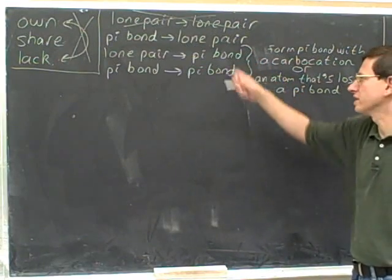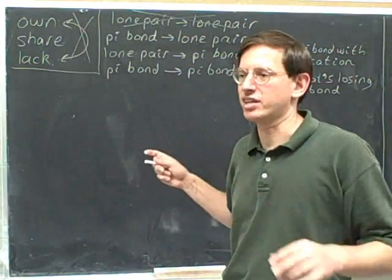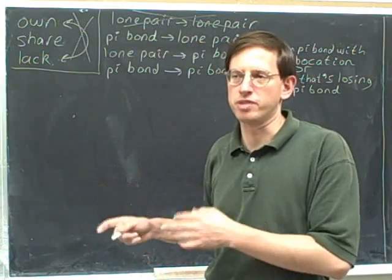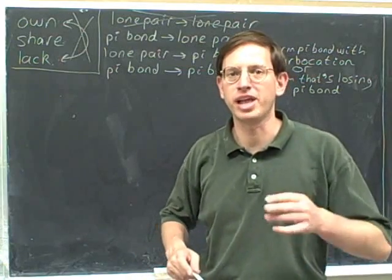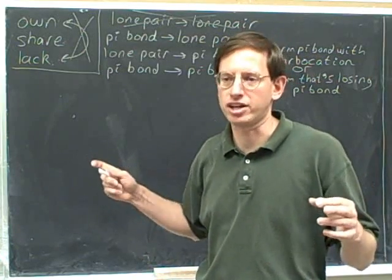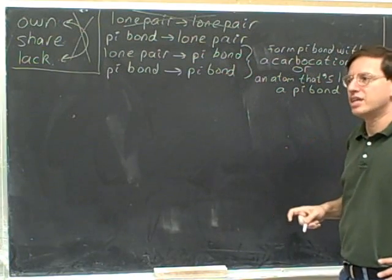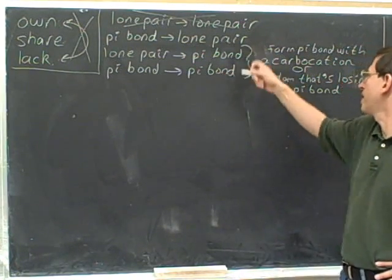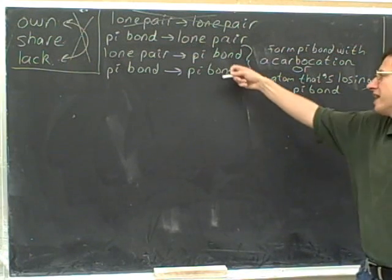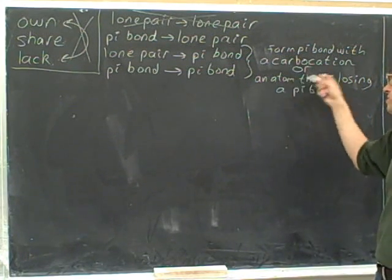So here are the two legal ways to form a new pi bond in resonance. Remember, in a sense we're not really forming a new pi bond, because that suggests the molecule is changing — and in resonance we're not really changing. We're just drawing a structure with a pi bond where the old picture didn't have one, and the true structure is a blend of both pictures. But we'll just talk as if we're making changes since it's easier. So: forming a new pi bond exceeds an octet unless you form it with a carbocation, or unless the atom gaining the pi bond is also losing a pi bond.